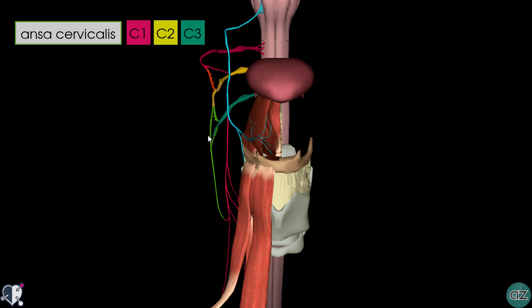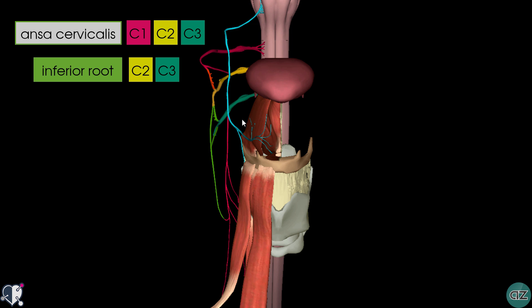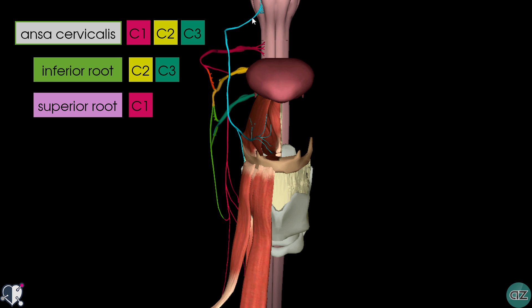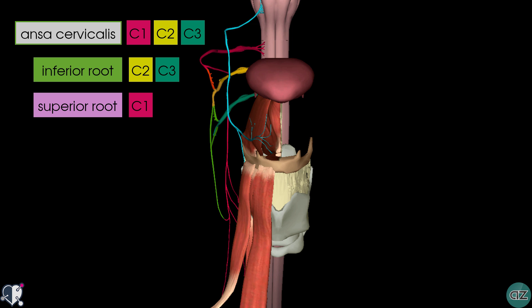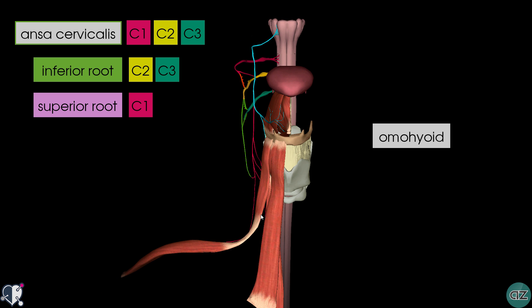The green part of the ansa cervicalis is the inferior root and it arises from spinal roots C2 and C3. In pink we've got the superior root of the ansa cervicalis and this arises from spinal root C1. This blue nerve on the model is the hypoglossal nerve, so some of the fibres from C1 travel with the hypoglossal nerve. Arising from the ansa cervicalis itself are four muscular branches which supply some of the infrahyoid muscles. On the model you can see the omohyoid muscle with its superior belly and inferior belly.